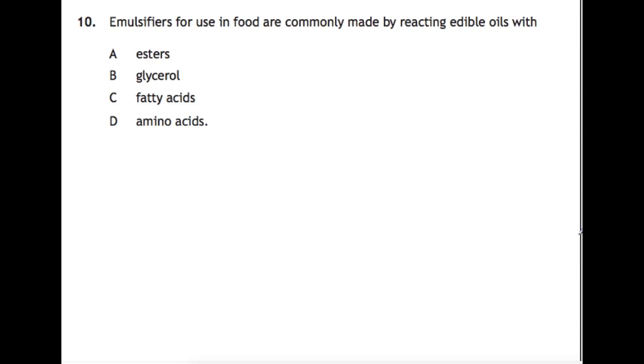Finally for this video question 10. Emulsifiers for use in food are commonly made by reacting edible oils with what? Now I find this question to have some questionable wording. I'm not quite sure what they were meaning with this. The answer is glycerol. However I'm not entirely sure why they put this question in with this wording. Emulsifiers you would know are like fats or oils but they have one or two chains missing. We don't go into much detail on how we've produced those. But this is what this question here is looking at. The answer is glycerol. If we react the edible oils with glycerol then we get emulsifiers.